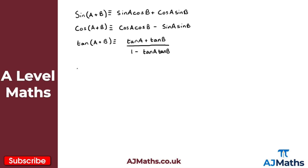Now moving on to sine of A minus B, this gives us sine A cos B, and then we minus cosine A sine B. Notice it's pretty similar to sine of A plus B — the only difference being that instead of a plus we have a minus.